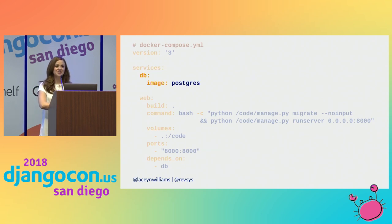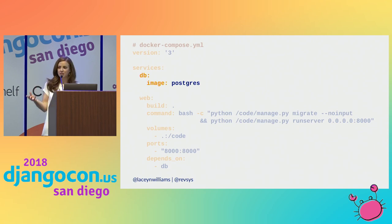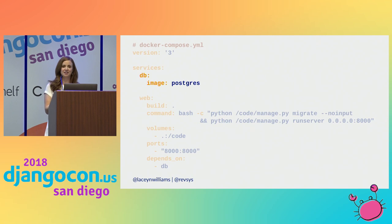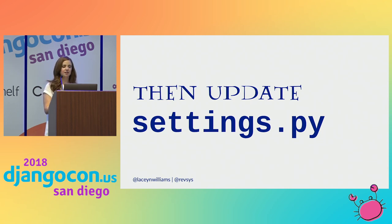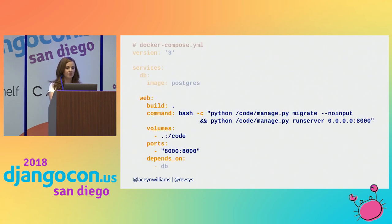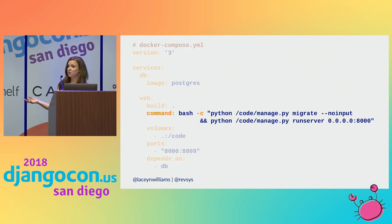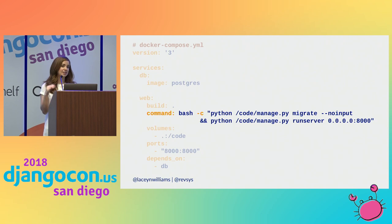For the purposes of this example we are using a database container and also a web container to separate our data from our code. Just like I don't have to have a local Python installation, I don't have to have a local Postgres installation either — I can tell Docker to go out and grab the most recent Postgres image, or a specific tag, and it will all just work. I don't have to configure anything locally other than changing my settings.py file. You can also run more than one command in your web service — if you want to, you can run migrations every time you start your project and also run your server, so you can skip a step.